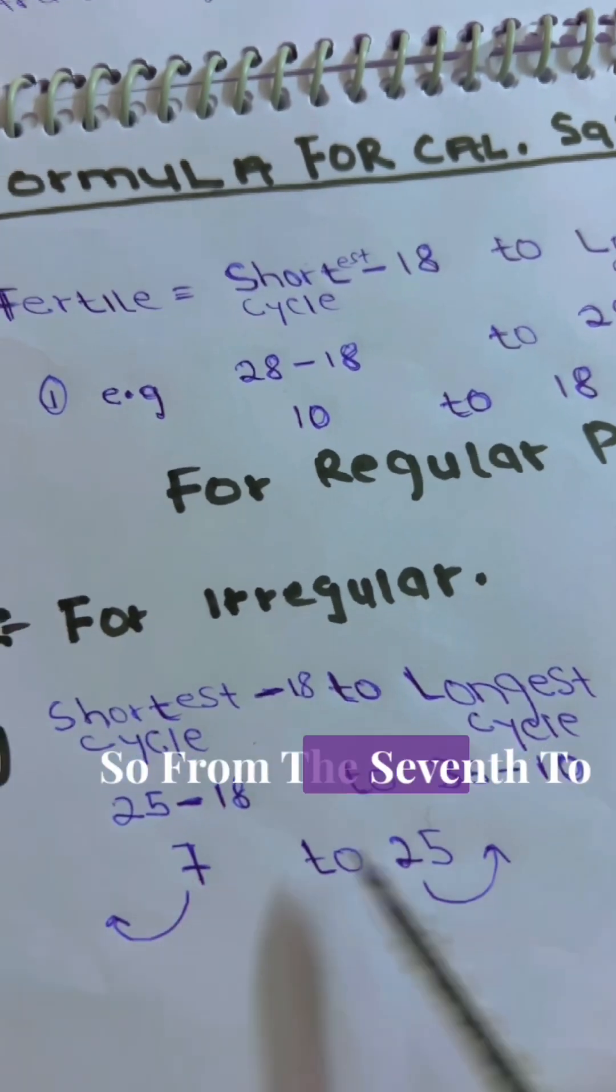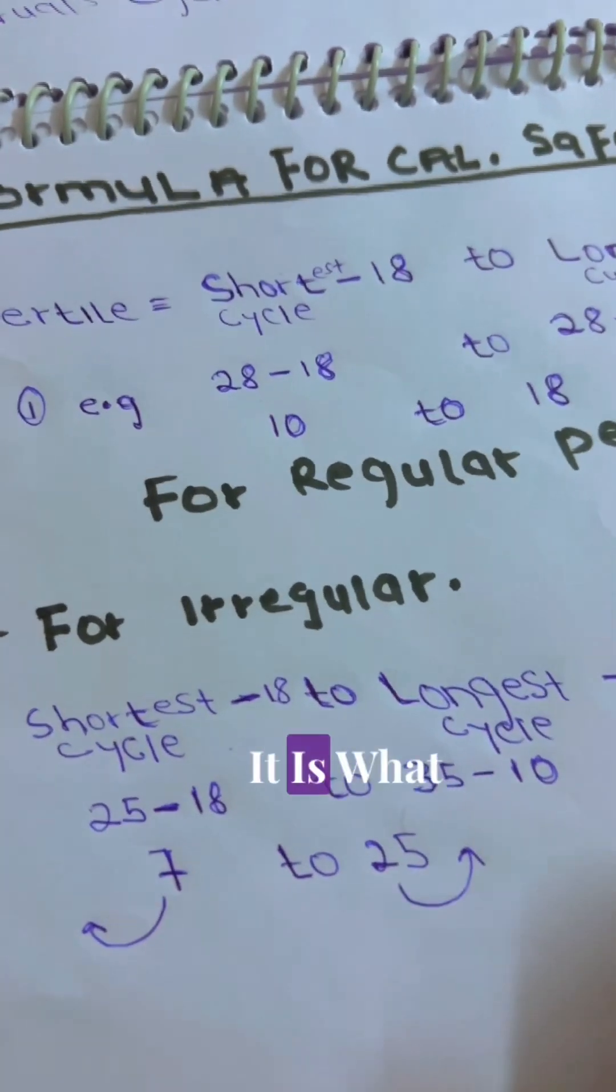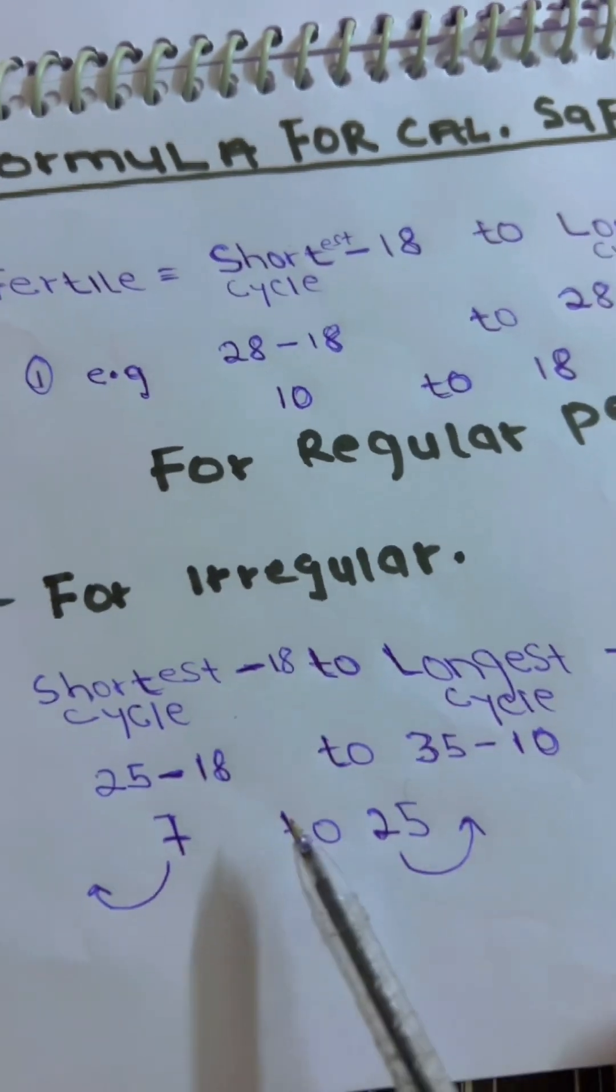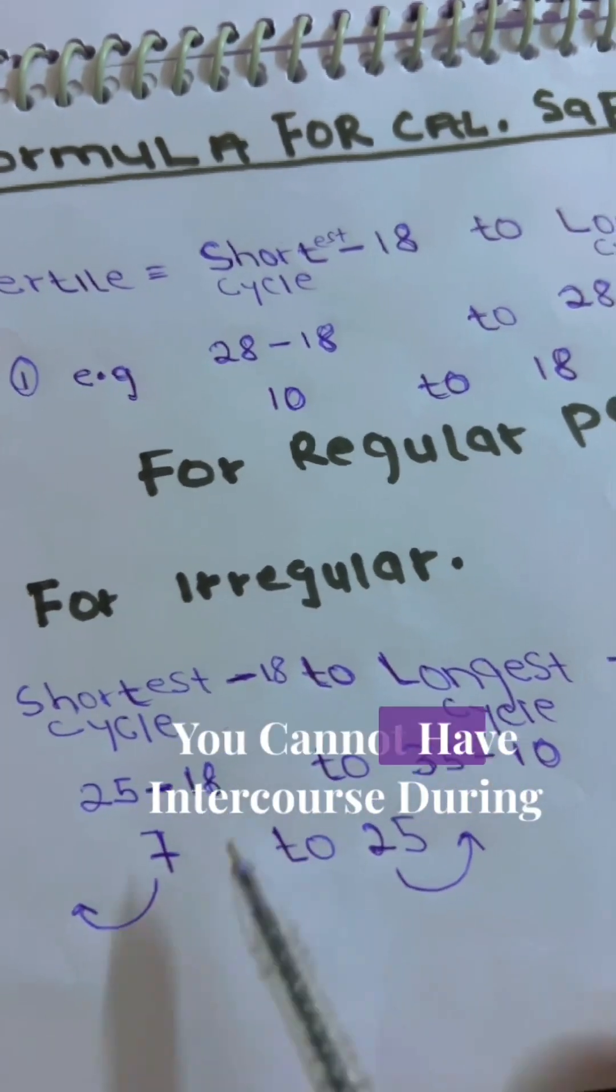So, from the 7 to the 25, it is fertile, it is unsafe. You cannot have intercourse during this period.